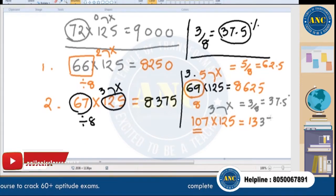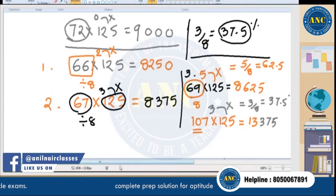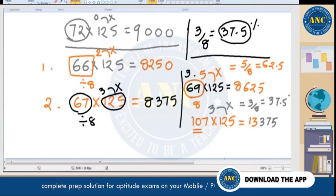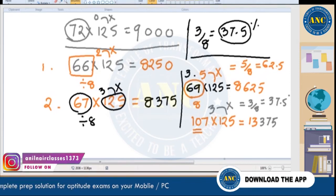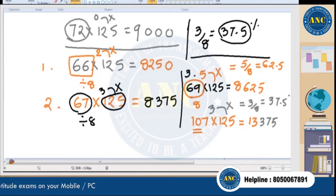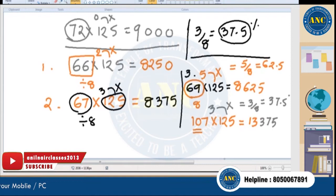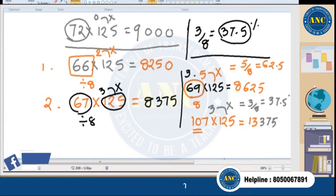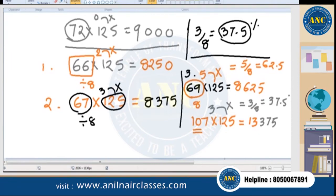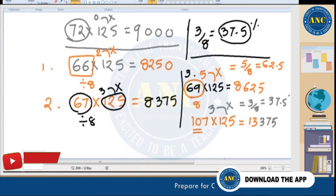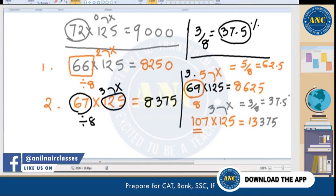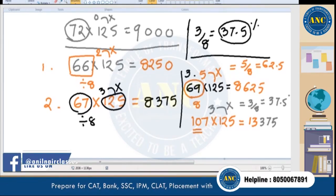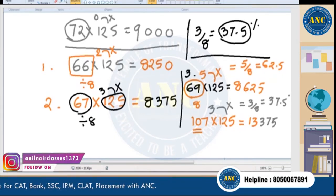Irrespective of whether the given number is divisible by 8 or not, you can always get the answer. Now I'll give more questions with larger numbers multiplied by 125. Very good — Divya, Vamshi, Krishna, Rashmi — all answers are correct!